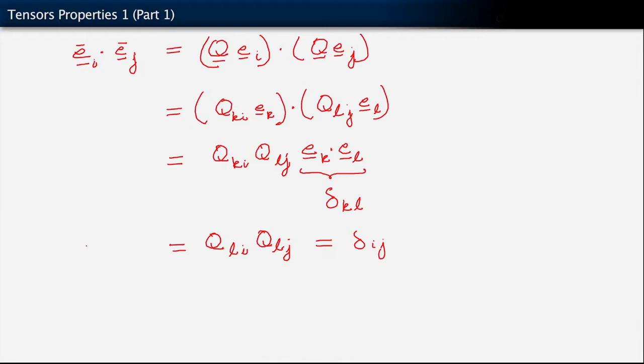And then we bring down what we had on the left-hand side. We see that indeed e_i bar dot e_j bar gives us delta_ij. So orthonormality is preserved. Orthonormality of the basis set e_i bar, i equals 1, 2, 3, that property is preserved.